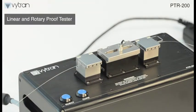Vytran offers both a linear and rotary proof tester. These systems require no fiber handling and can accommodate very high tension testing.